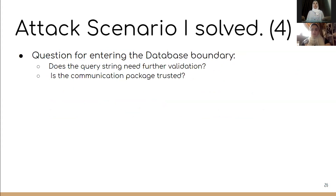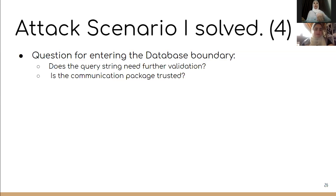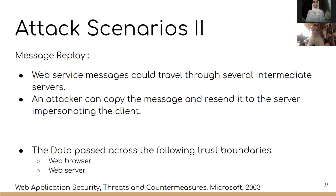The third trust boundary crossing is when data moves from the web server to the database. Each cross-boundary should assume that received data is malicious. At the database level, we ask whether the query string needs further validation at this step. We also ask whether the communication package is encrypted and what communication protocol is being used.